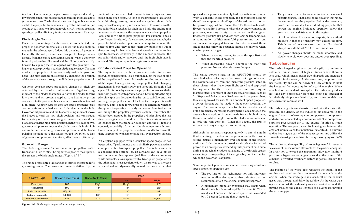The blade angle range for constant speed propellers varies from about 11.5 degrees to 40 degrees; the higher the speed of the airplane, the greater the blade angle range. The range of possible blade angles is termed the propeller's governing range, defined by the limits of the propeller blades' travel between high and low blade angle pitch stops. As long as the propeller blade angle is within the governing range and not against either pitch stop, a constant engine RPM is maintained. However, once the propeller blade reaches its pitch stop limit, the engine RPM increases or decreases with changes in airspeed similar to a fixed pitch propeller. If airspeed decreases enough, the blades reduce pitch until they contact their low pitch stops, after which further reduction in airspeed causes RPM to decrease. Conversely, if airspeed increases, the blade angle increases until the high pitch stop is reached and RPM then begins to increase.